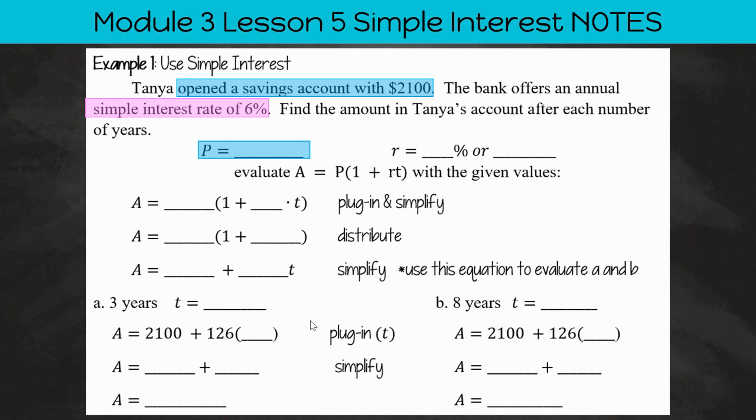So P here is our principal amount, which is $2,100. And our R rate is 6%. And to convert that 6% to a decimal, we're going to divide by 100 and we get 0.06.